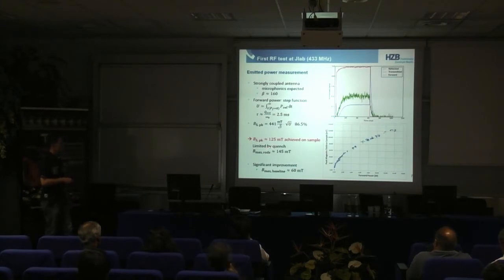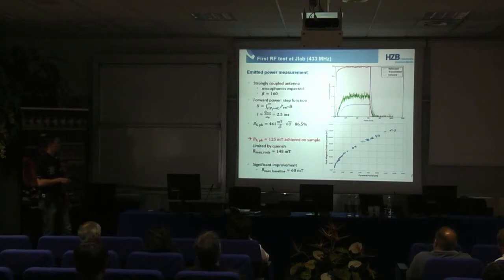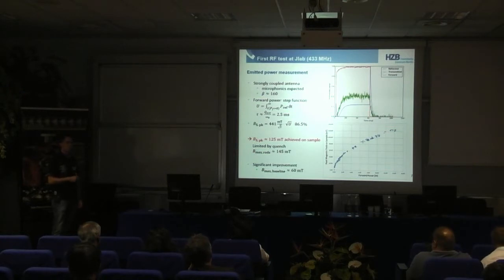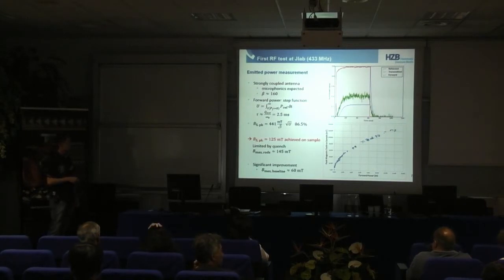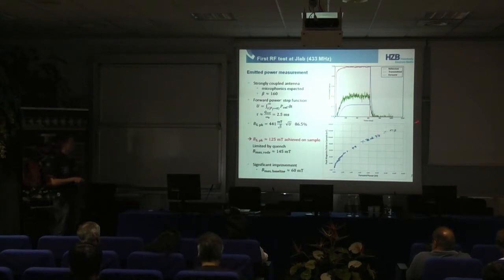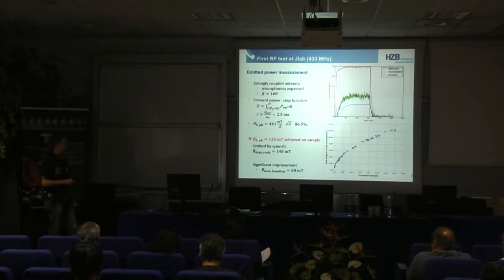We are then limited by quench. The maximum magnetic field we have on niobium is 145 millitesla on the rods. At the moment, we cannot say where the quench was located — whether it was on the rods or on the sample. If it's on the sample, there would be some potential to increase this further. But this is a significant improvement over the baseline design, where measurements can be done up to around 60 millitesla. We expect to be able to measure up to 125 millitesla.